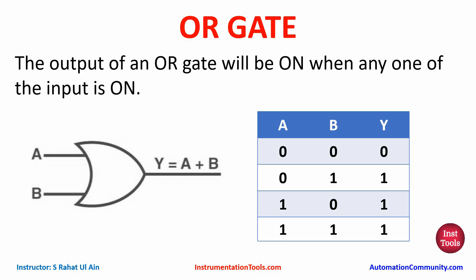For the OR logic gate, the output will be ON when any one of the inputs is ON. If we have two inputs A and B, if any one is true the output Y will be true. As shown in the truth table: when both inputs are false the output is false; if B is true and A is false the output is true; if A is true and B is false the output is also true; and if both inputs are true the output is true. So at least one input should be true for the output to be true.